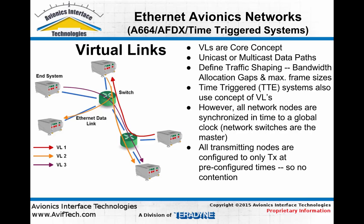With AFDX systems, the bandwidth allocation for an individual virtual link is simply a speed limit. Any node on the network can communicate at any time, but it can only use a certain amount of bandwidth on that virtual link.